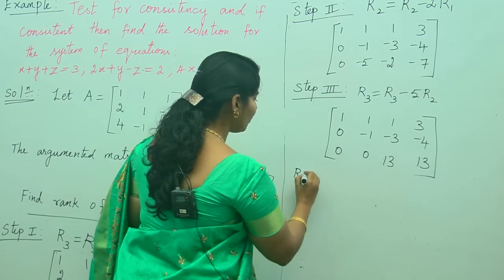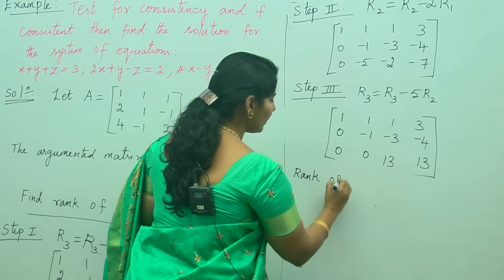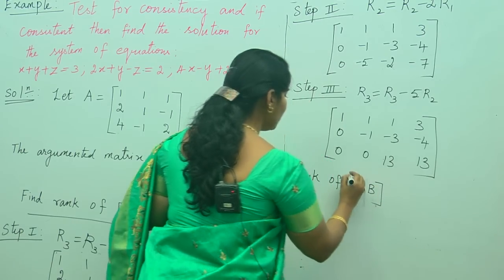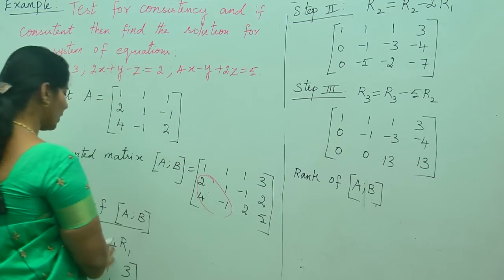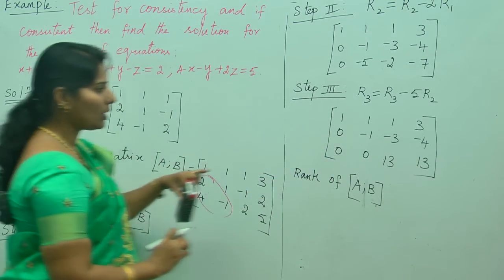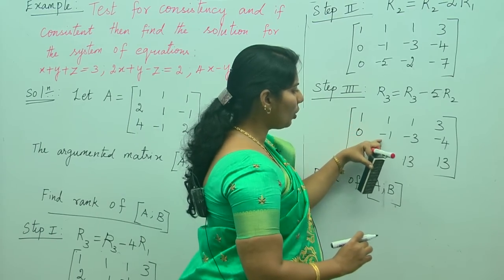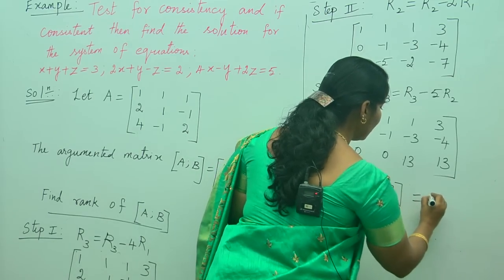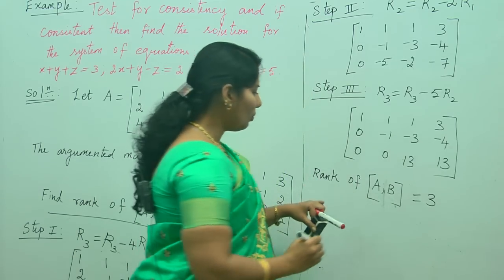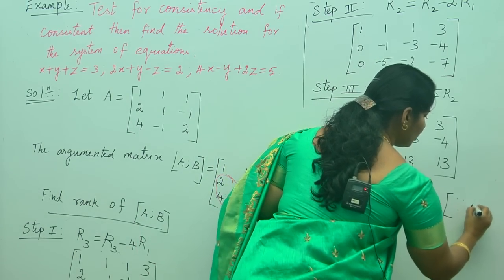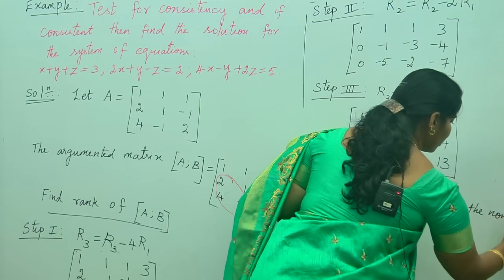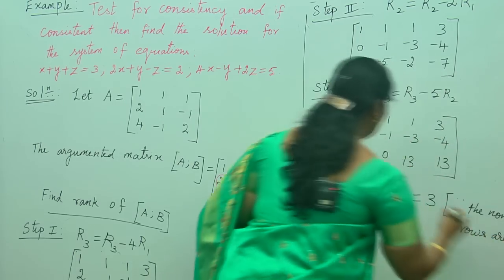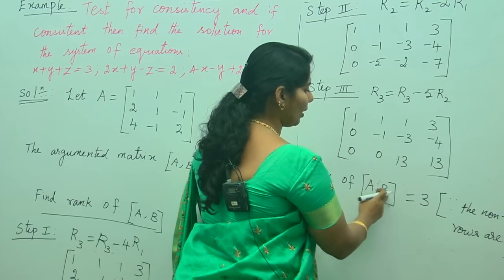Now we write the rank of the augmented matrix [A|B]. From the transformed matrix, we count how many non-zero rows there are: 1, 2, 3. There are 3 non-zero rows. Therefore the rank of the augmented matrix [A|B] is equal to 3.